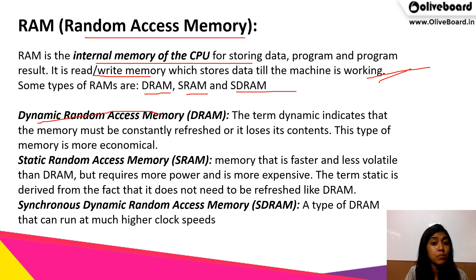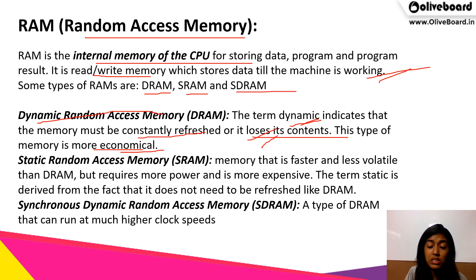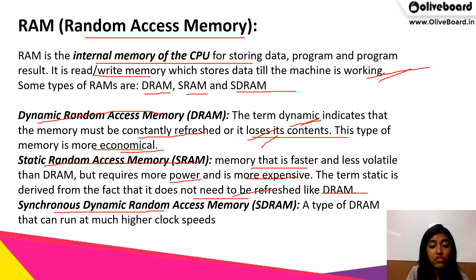DRAM stands for dynamic random access memory. The term dynamic indicates that the memory must be constantly refreshed or it loses its content. This type of memory is more economical. SRAM, or static random access memory, is faster and less volatile compared to DRAM, but requires more parts and is more expensive. The term static is derived from the fact that it need not be refreshed like DRAM. The third is SDRAM — synchronous dynamic random access memory — which is a type of DRAM that can run at a much higher speed.